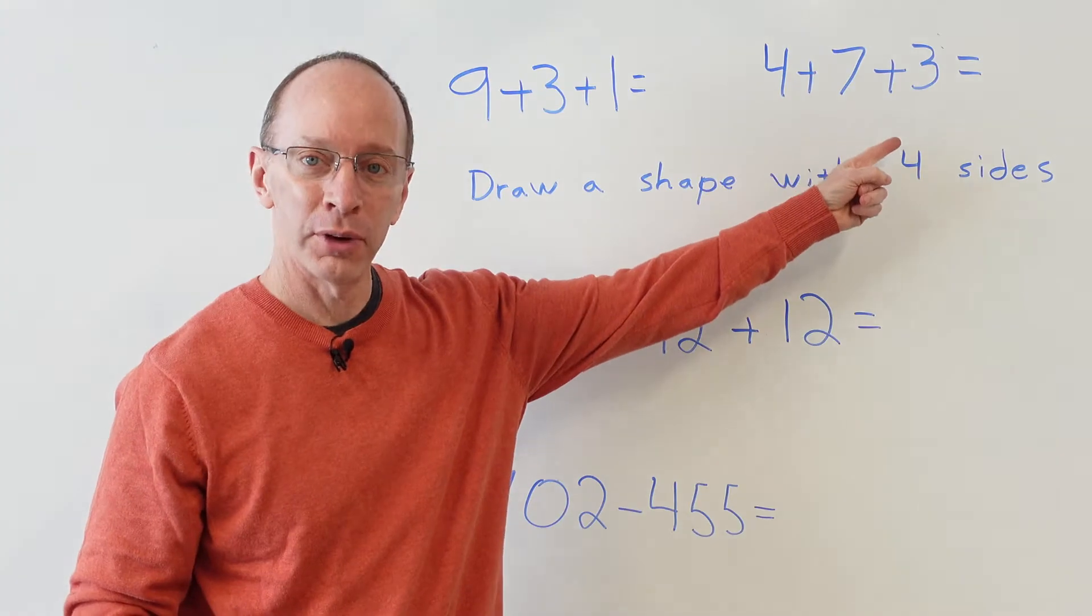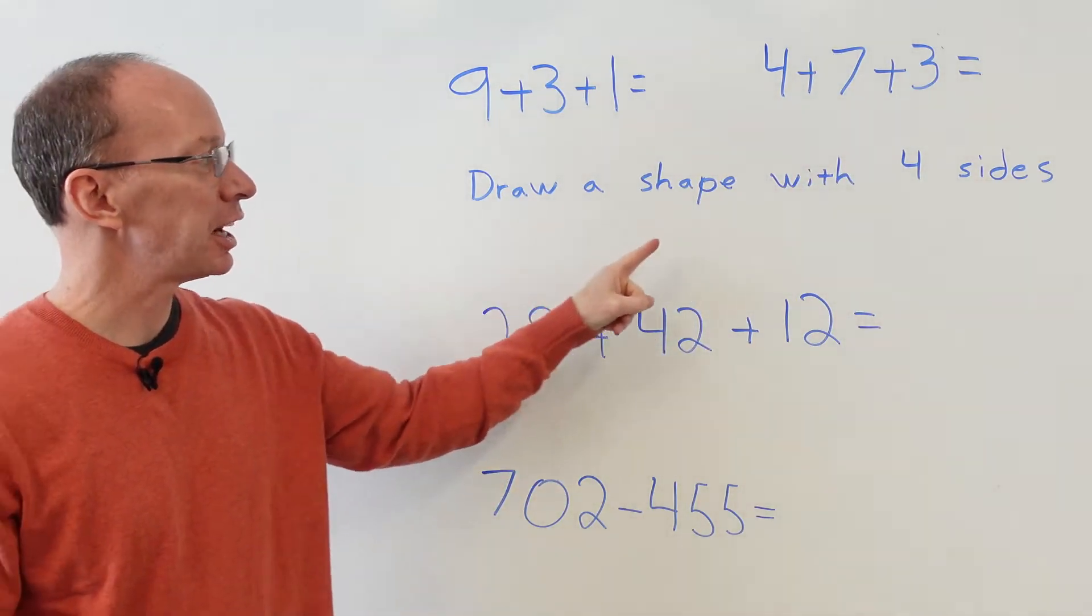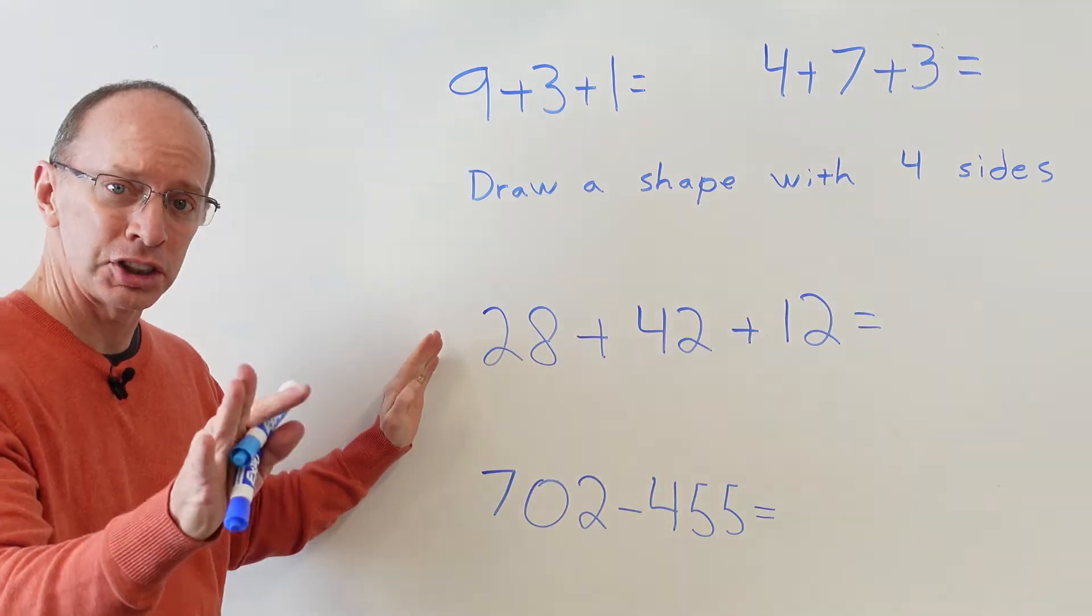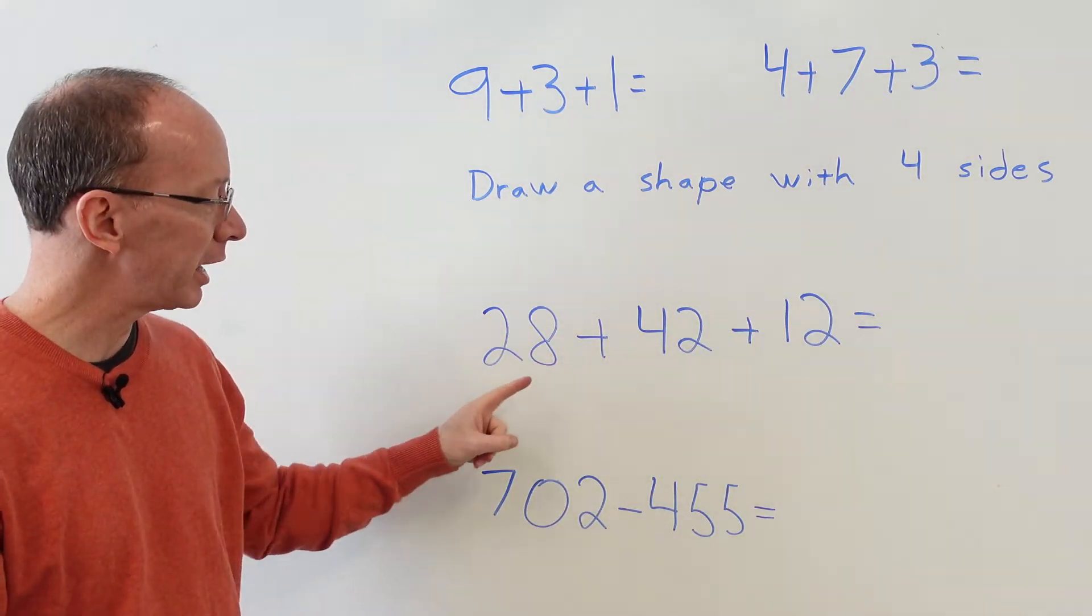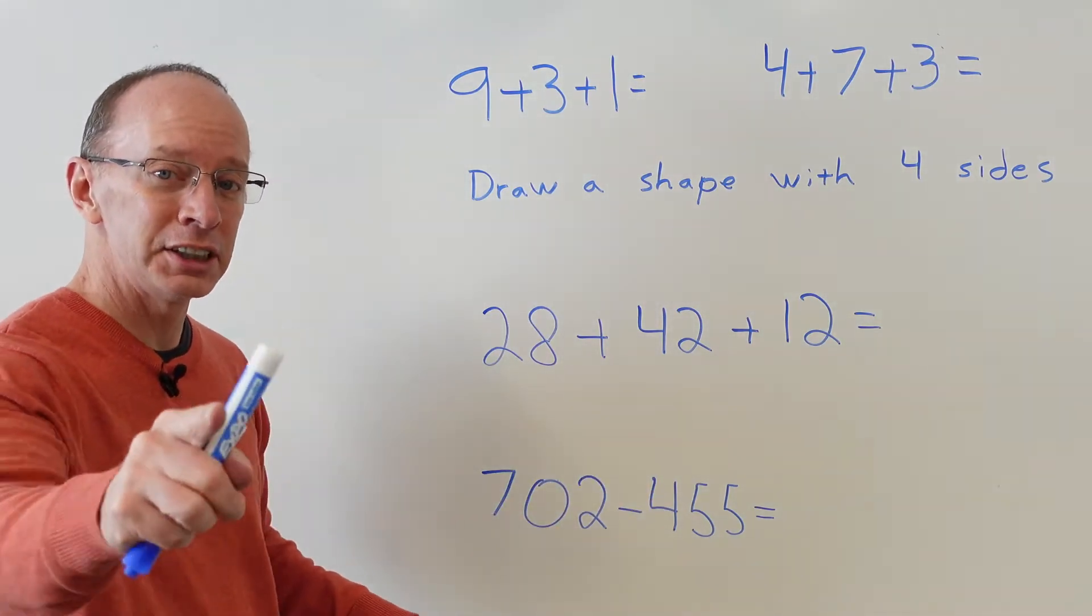Then the next question is draw a shape with four sides. And then this is a little challenging problem here. We have 28+42+12, we have three two-digit numbers you have to add up there.